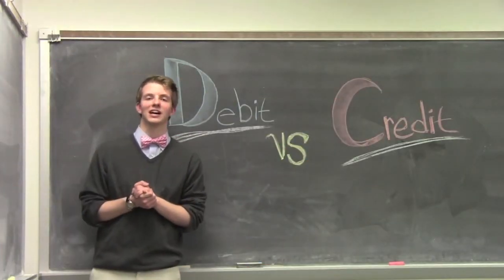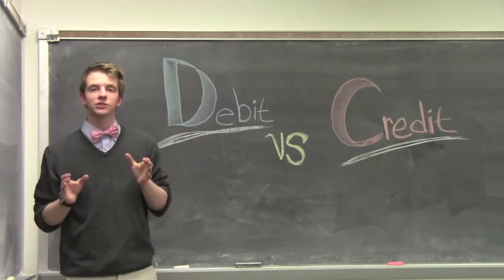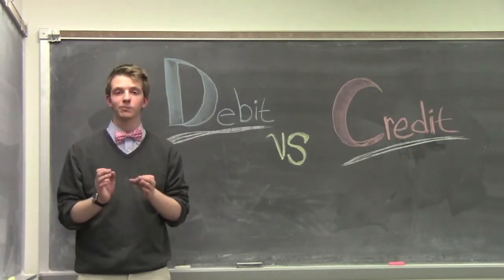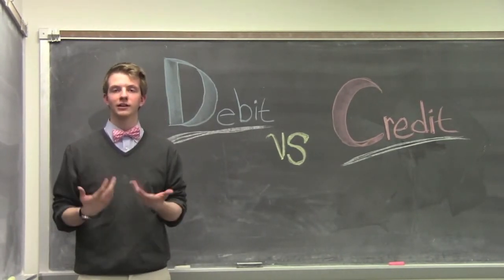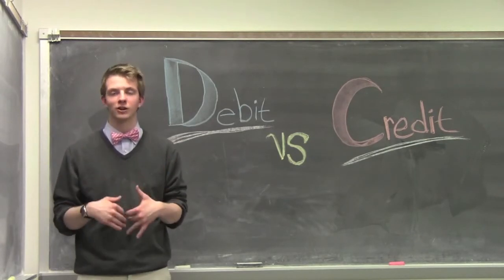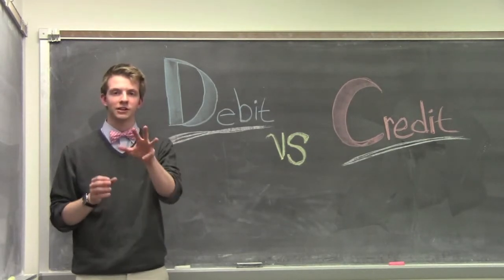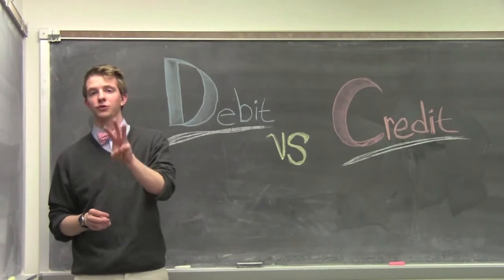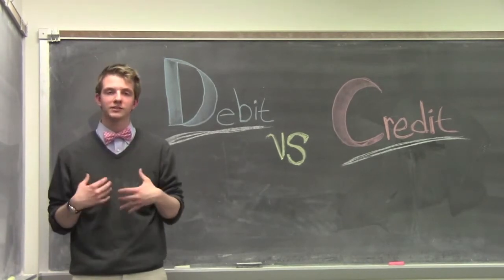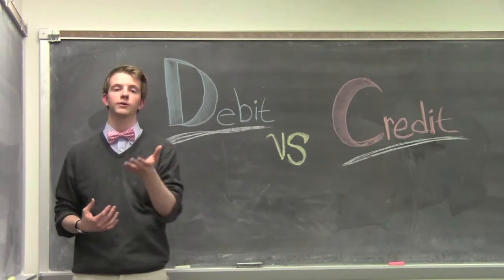Hello everybody and welcome to lesson six. In lesson six we're going to be talking about some basic accounting principles. Accounting is the way in which a business keeps track of where all of its money is going. Today we're going to talk about three main things within accounting that will help you keep track of the money you gain and spend.